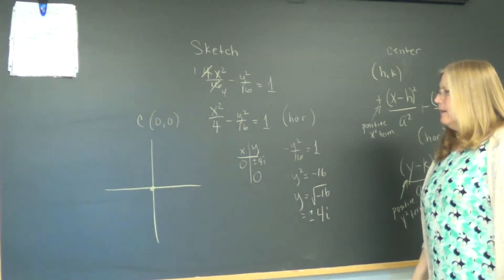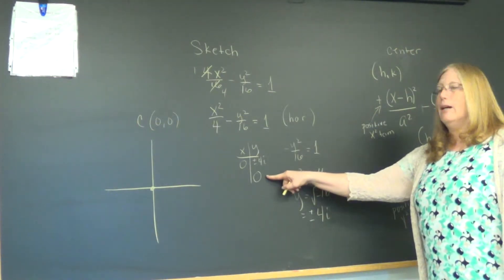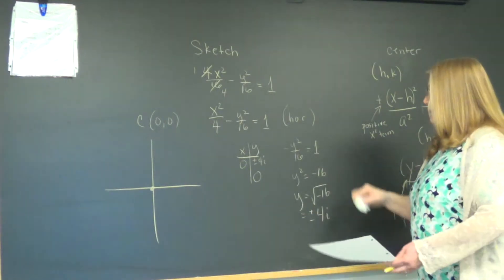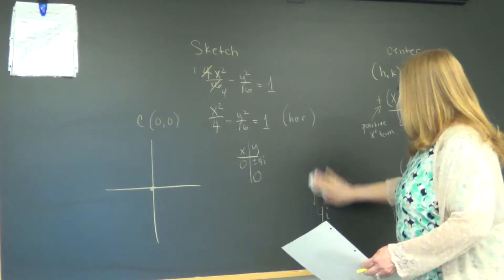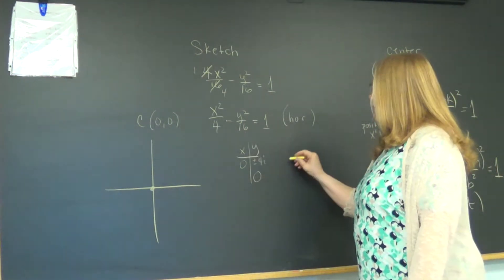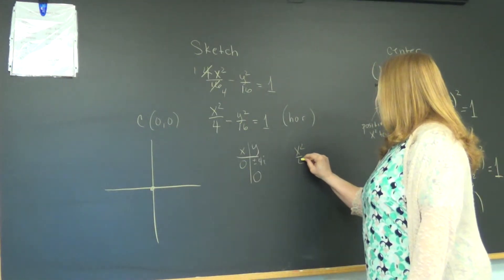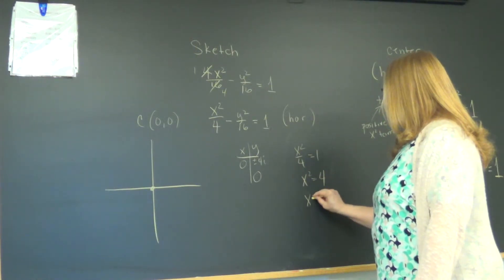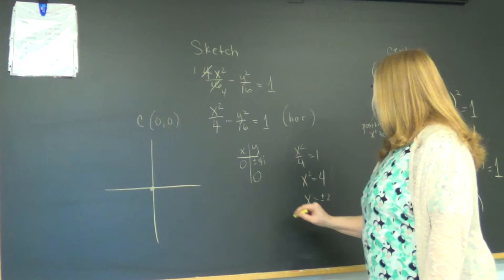Let's do the same thing. Zero out y and tell me what x is. When I zero out y, this term is gone and I get x squared over 4 equals 1. Multiply both sides by 4 and take the square root. I get plus or minus 2.